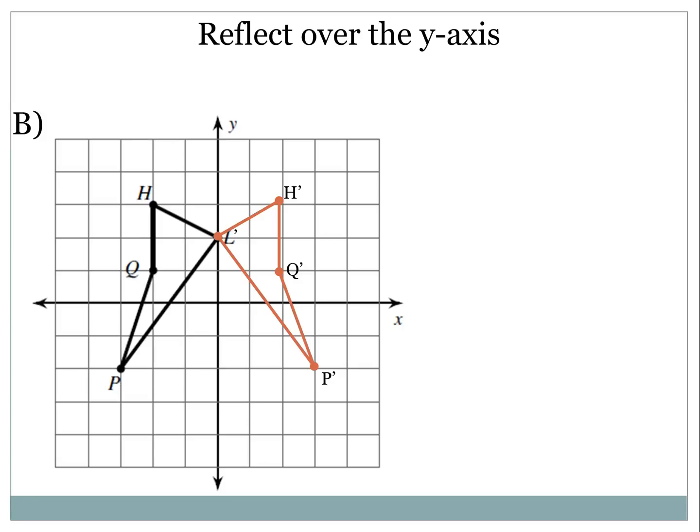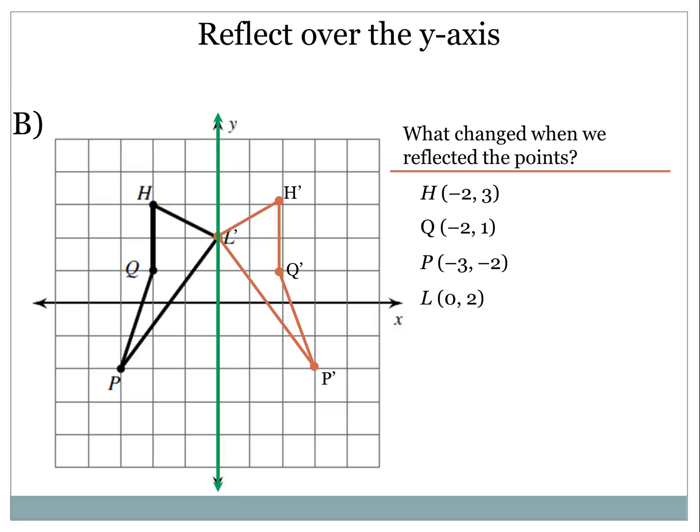All right, so let's take a look at example B. This shape HQPL has been already transformed and reflected over the y-axis, which you see blinking now, and really what we're looking at is, again, what changed when we reflected those points. So HQPL, from H to H prime, we saw that it became from negative 2, 3 to 2, 3.